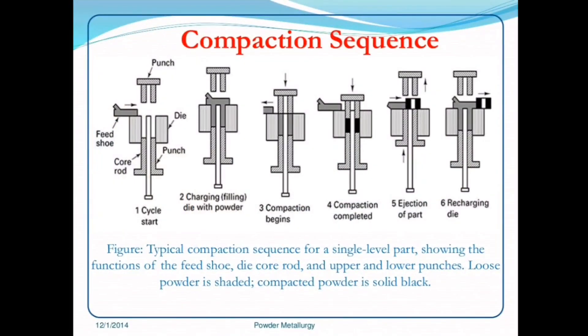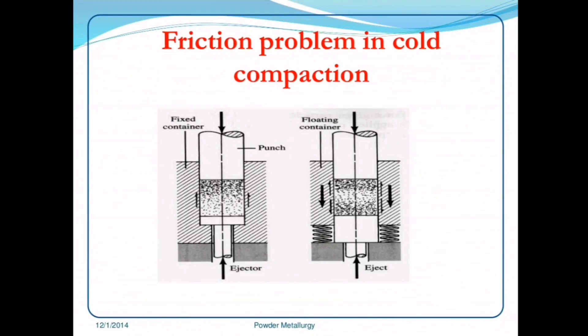The compaction sequence cycle includes: cycle start, charging or filling the die with powder, compacting begins, compaction completed, ejection of part, and recharging the die. Sometimes friction problems occur in cold compaction.